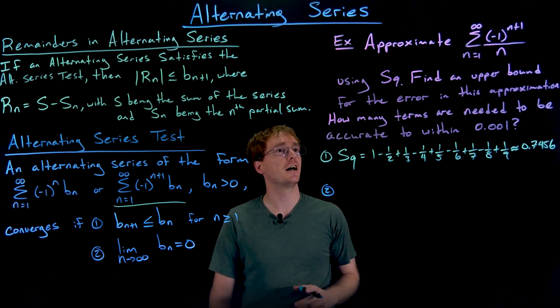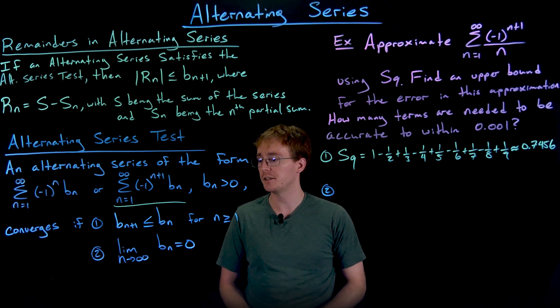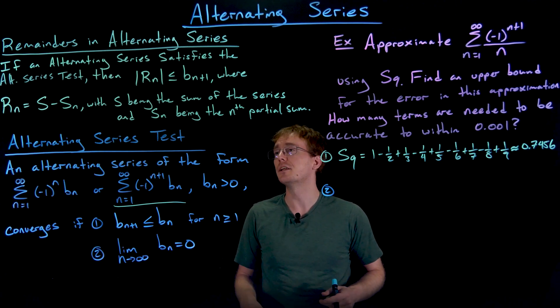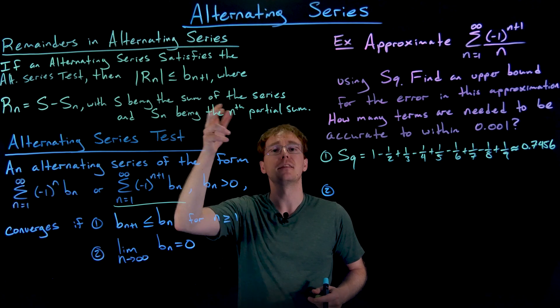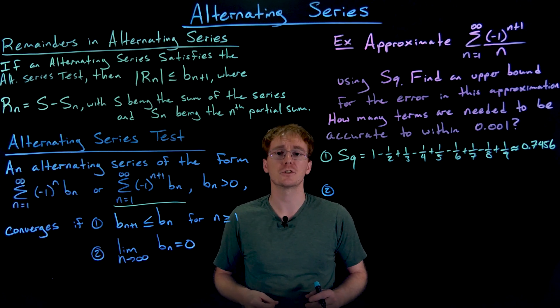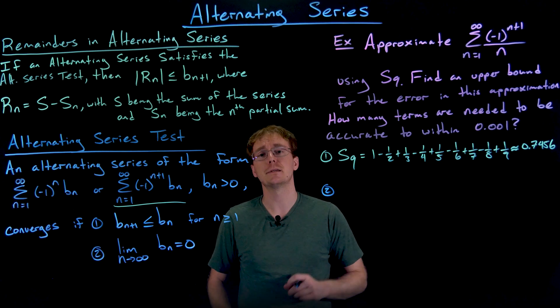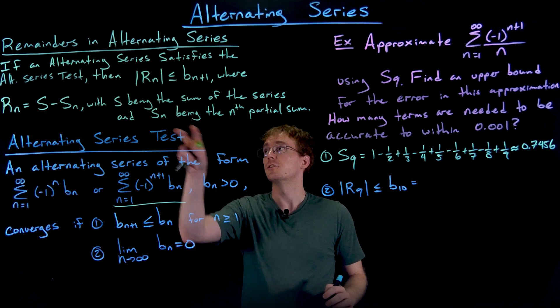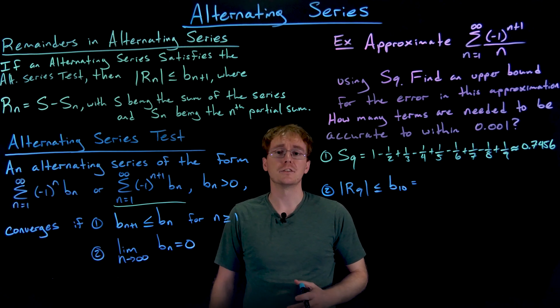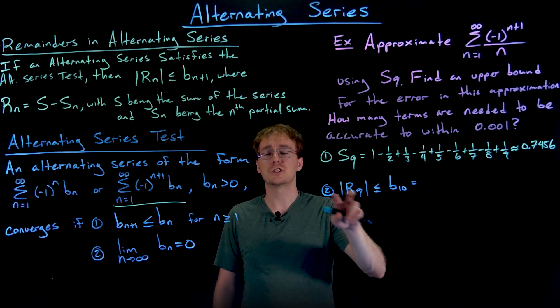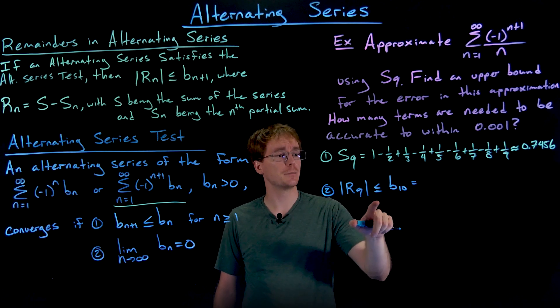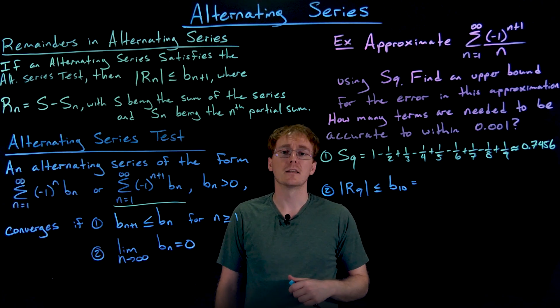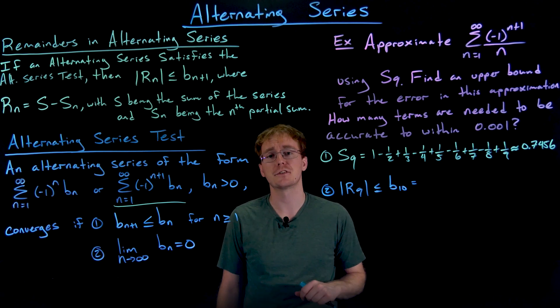The second part is asking us to find an upper bound for the error in our approximation. By our remainders and alternating series theorem, we know that our error is always going to be less than the next term or the n plus first term. So that b sub n plus one is going to be the upper bound for our error when approximating using a partial sum. Using our remainder and alternating series theorem, we know that our remainder, which is our error in using the ninth partial sum, is going to be less than that n plus first term, where n is equal to nine. So it's going to be less than or equal to our tenth term in our series.